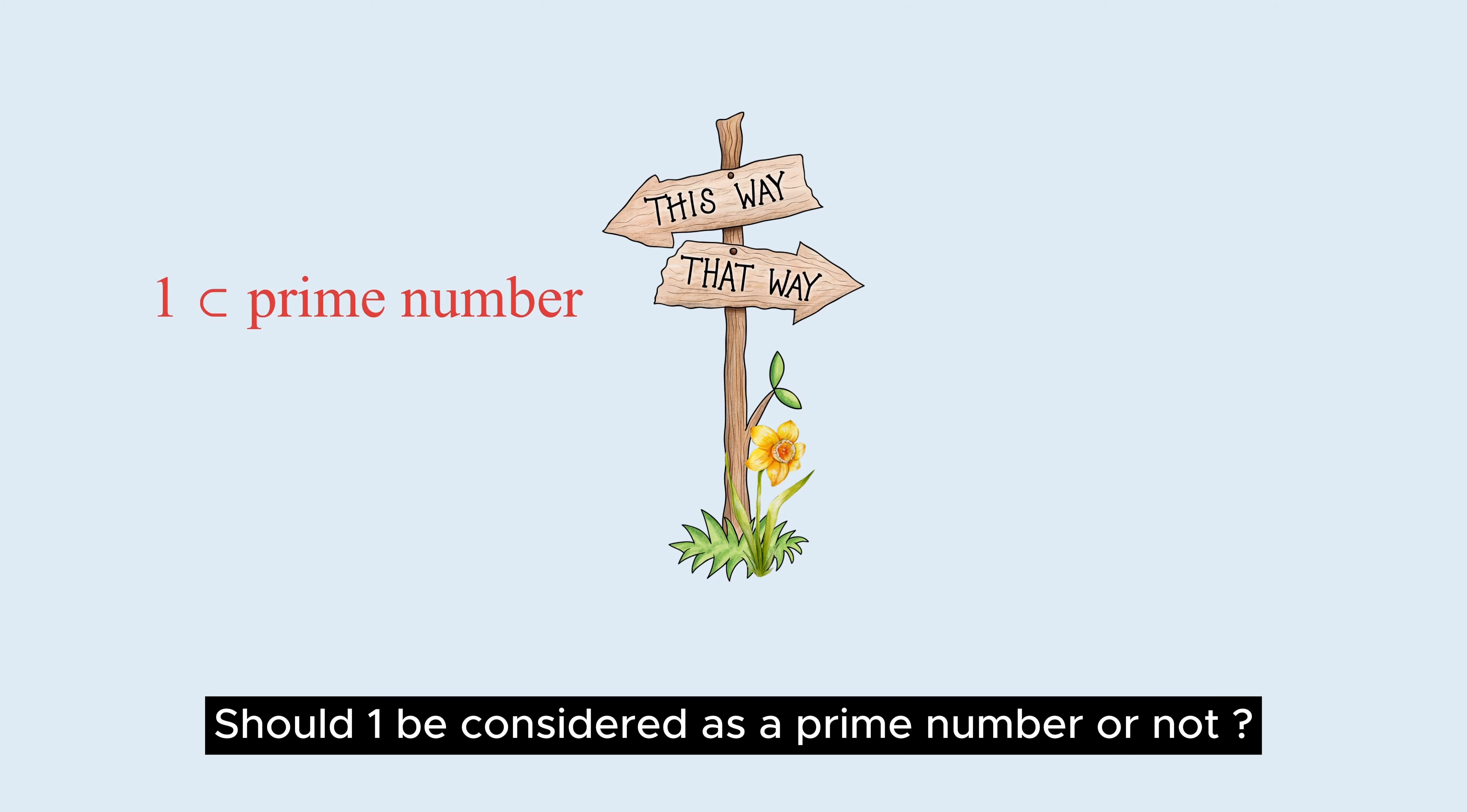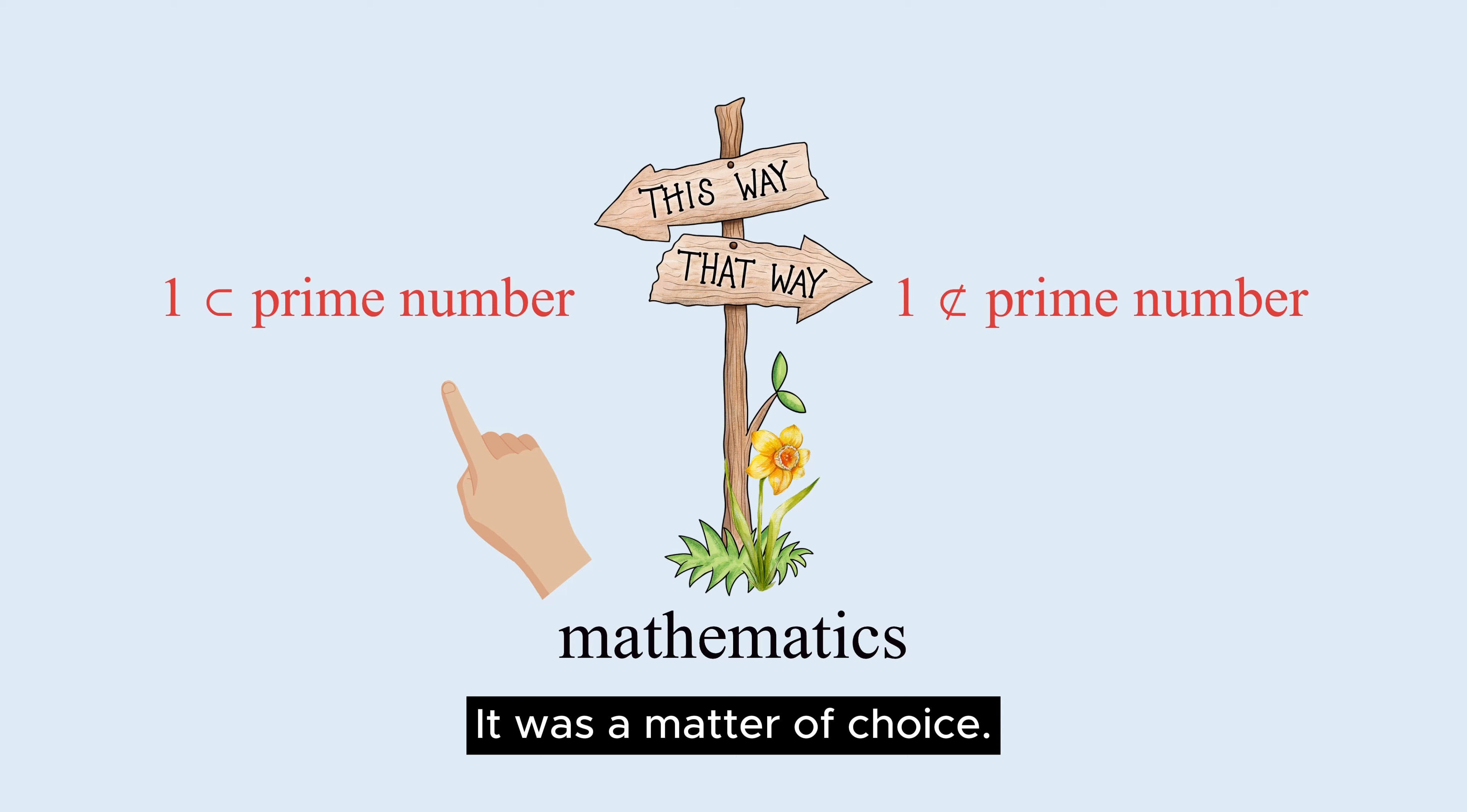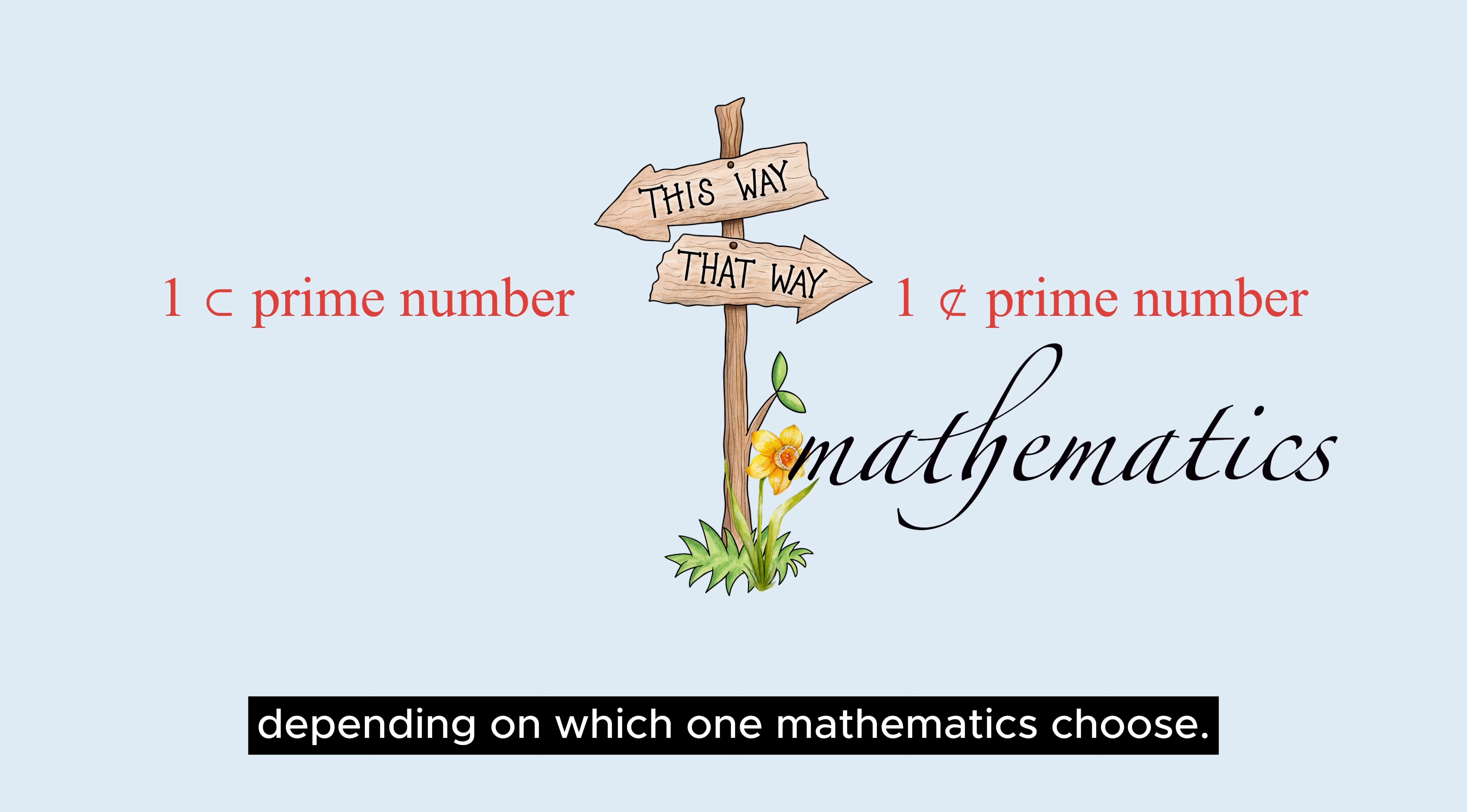Should one be considered as a prime number or not? That was the question given to mathematics. It was a matter of choice. The appearance of mathematics would change dramatically depending on which one mathematics chose.